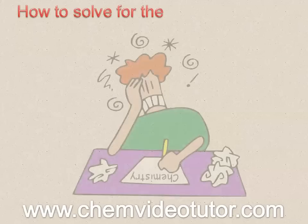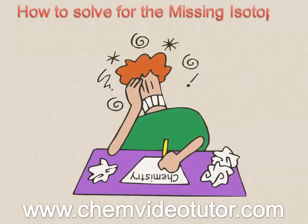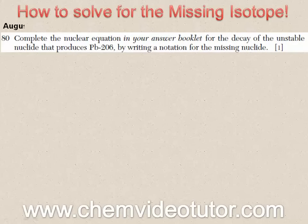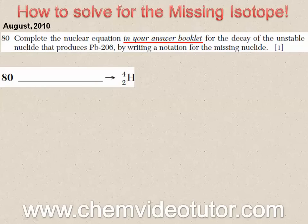In this video, I will show you how to solve for the missing isotope. Let's use this constructed response question from the August 2010 Chemistry Regents exam. When referring to the answer booklet, you will see the following incomplete equation. Your job is to complete it by writing a notation for the missing nuclide or isotope.